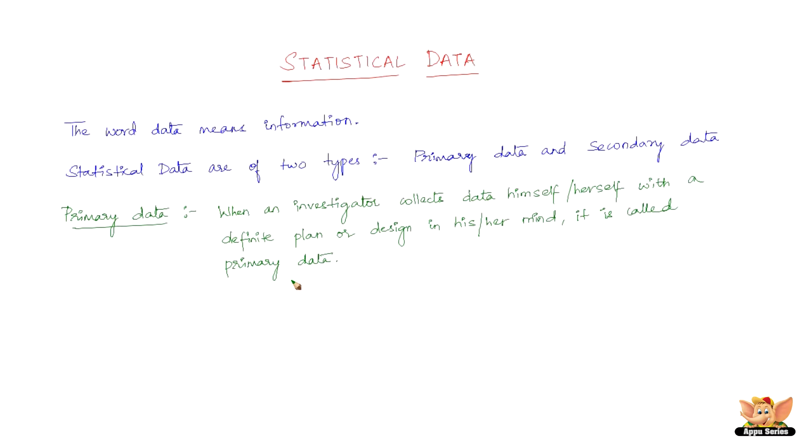Now let us look into what is secondary data. Data which are not originally collected but rather obtained from published or unpublished sources are known as secondary data. Now secondary data are collected by an individual or an institution for some purpose but are used by someone else in another context.